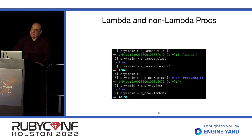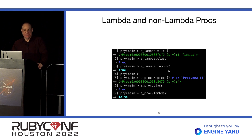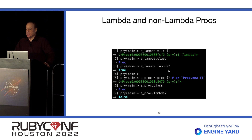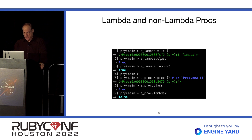The Proc class can produce instances that are Lambdas and instances that are not Lambdas. The naming is unfortunate because the name of the class — Proc — is the same as the name of the non-Lambda Proc when we define it. So in spoken language, if somebody says Proc, it's really ambiguous. I usually use the term 'non-Lambda Proc' when I mean an instance of the Proc class which is not a Lambda. Here we have a Lambda — its class is Proc, and lambda? returns true. Here's a Proc — its class is Proc, but lambda? returns false.